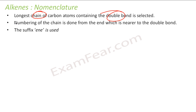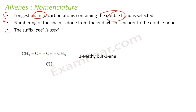We will talk about nomenclature of some alkenes. The longest chain of carbons is selected, which should have the double bond. The longest chain with double bond is selected, and then the numbering is done so that we get the minimum numbers. The suffix '-ene' is used. For example, this compound is 3-methyl-but-1-ene because the longest chain is but, at third position I have a methyl group, and at first position I have a double bond.